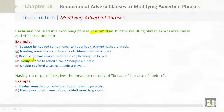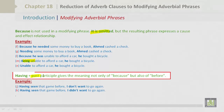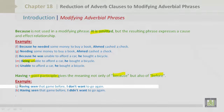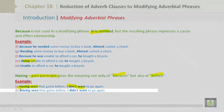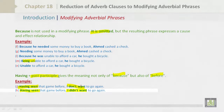Let's move on to having plus the past participle. This gives the meaning not only of because, but also of before. For example J: 'Having seen that game before, I don't want to go again.' Or K: 'Having seen that game before, I didn't want to go again.'